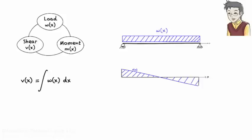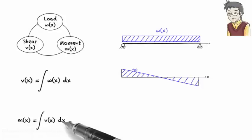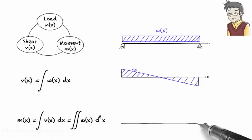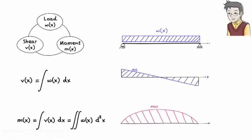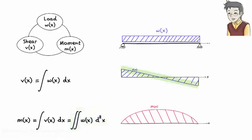Similarly, bending moment can be defined as M(x) equals the integral of V(x), which equals the double integral of W(x), since V(x) is defined as the integral of W(x). So, if we express the applied load as a mathematical function, its first integral describes shear in the beam, and the function's second integral describes moment in the beam. This is a graphical representation of the integral of W(x), and this is a graphical representation of the double integral of W(x).